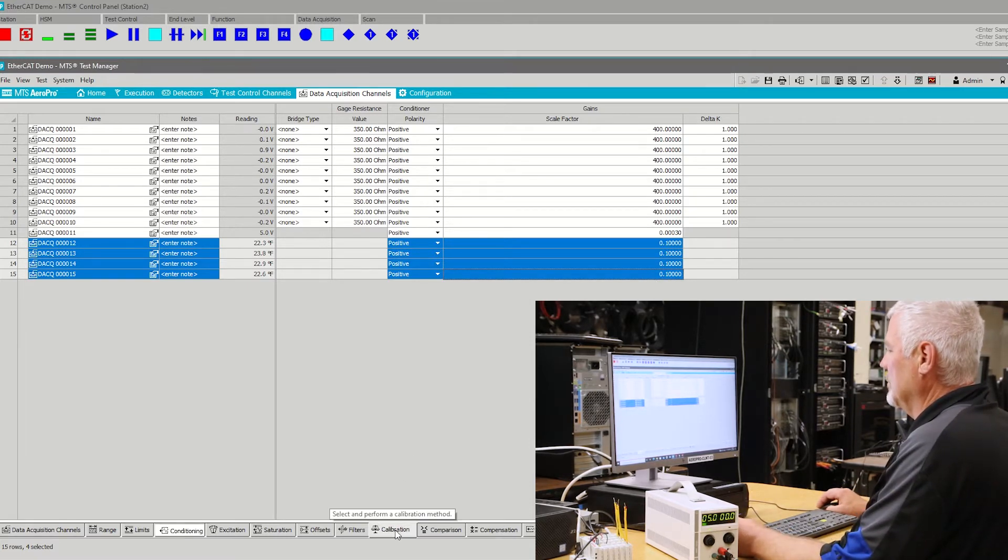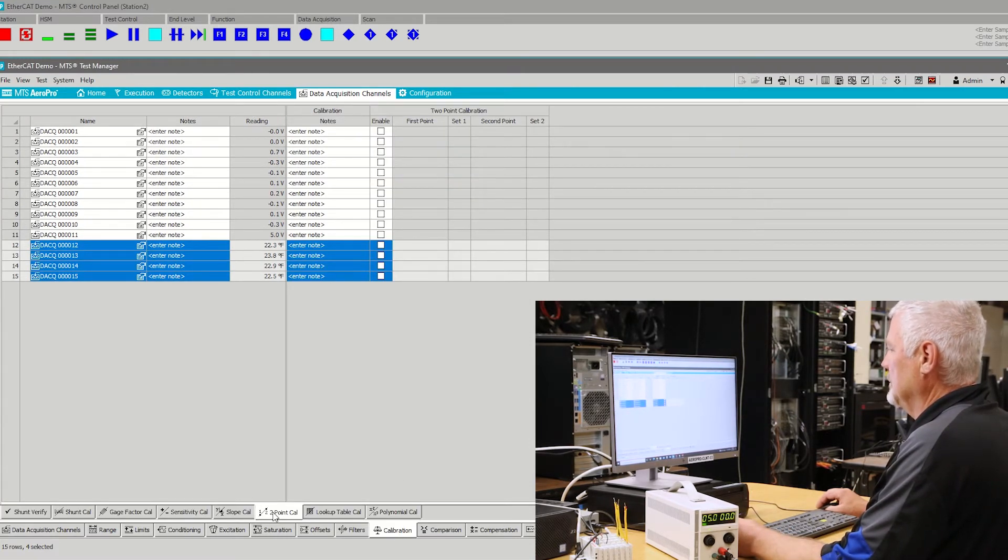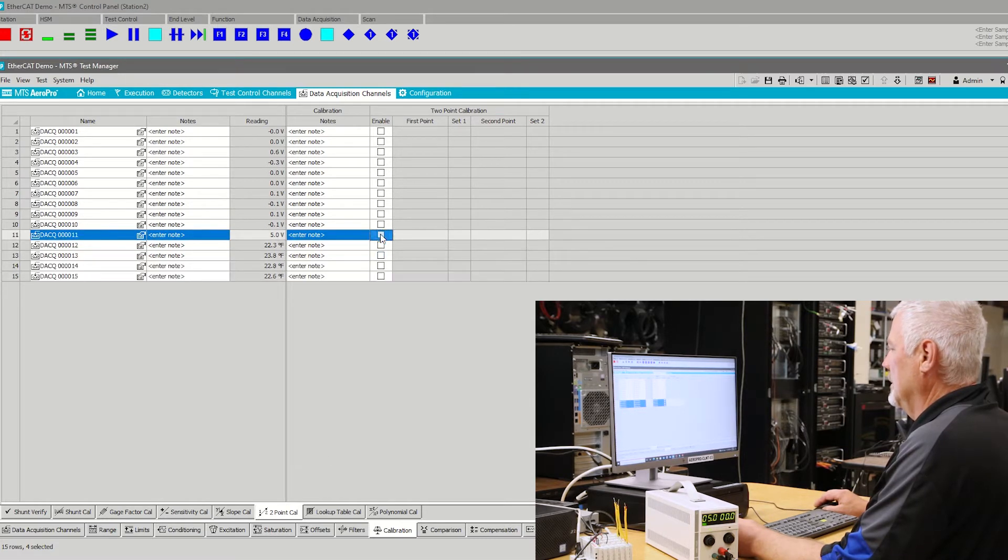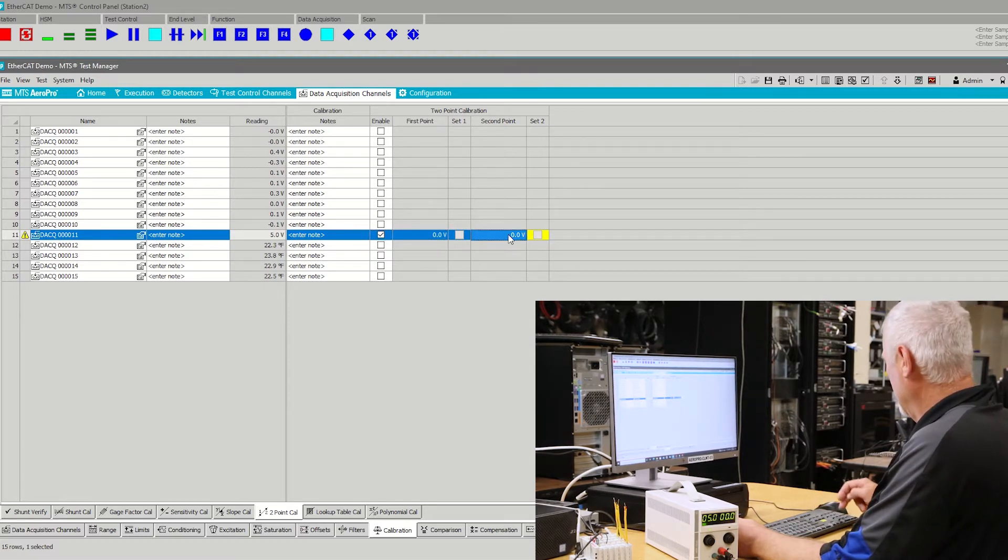Your next option is to go to the calibration tab, select two-point cal, enable the cal, and then choose two points. Here, I will choose zero volts and five volts.